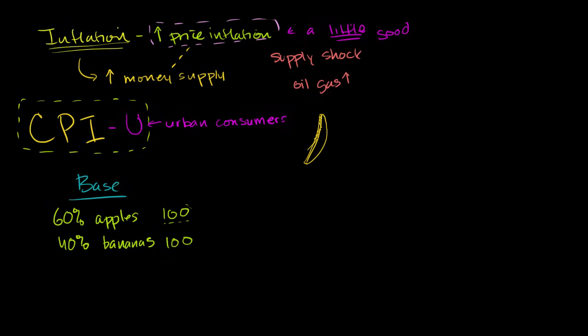So let's say in our current year, it could be the very next year, and we're going to assume these same weights, that we're still spending 60% on apples and 40% on bananas. In our current year, the apple index, let's say that it has grown 50% to 150. So it is plus 50%. And let's say that the banana index has grown to 180. So bananas have gotten even more expensive, plus 80%.